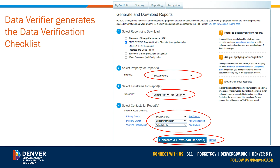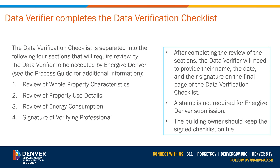Under Step 4, select the relevant property contacts that will be receiving the data verification report. Next, confirm all selections are correct and click Generate and Download Report. Now you are ready to complete the data verification checklist. The checklist is separated into four sections: whole property characteristics, use details, energy consumption data, ending with the name, date, and signature of the verifier.